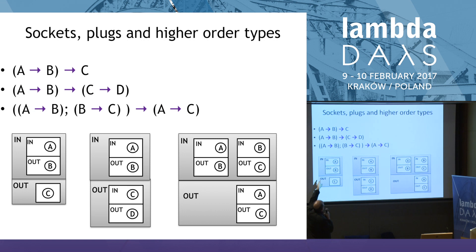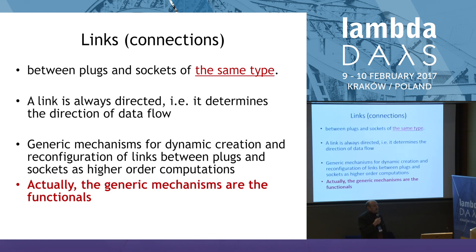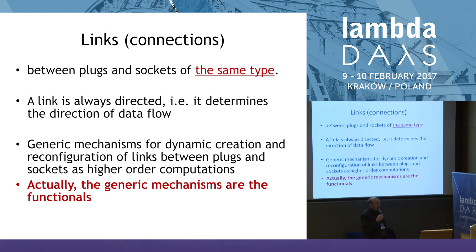Higher-order types are created as boards of sockets and plugs in a very simple way. A socket can have a functional type from A to B, and a plug of type C. All sockets can be composed of primitive sockets of a given type, and the same applies to plugs. A link between a socket and a plug is directed — it corresponds to data flow from a socket to a plug. The generic mechanism for dynamic creation and reconfiguration of links between plugs and sockets corresponds to higher-order computation, and this very generic mechanism can be considered as functionals.